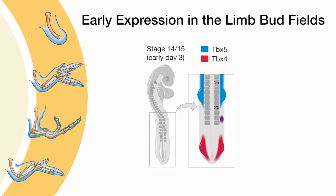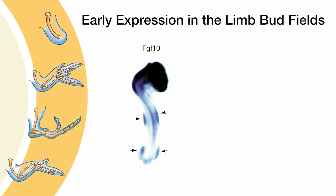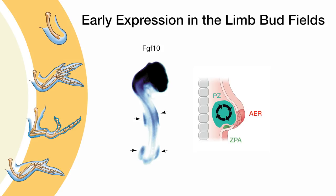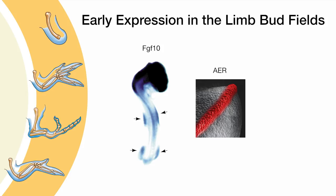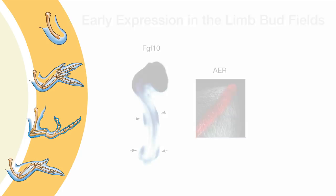Whether forelimb or hind limb, mouse or chick, they all lead to the expression of fibroblast growth factor 10 in the developing progress zone. This FGF10 expression promotes proliferation and the maintenance of the different transcriptional regulators. Previously, I mentioned that this mesenchymal proliferation is influenced by interactions with the apical ectodermal ridge. Signaling from the AER to the progress zone is mediated by a different member of the fibroblast growth factor family — FGF8.